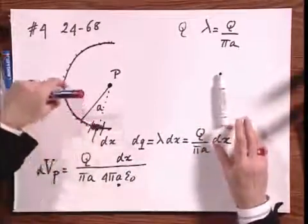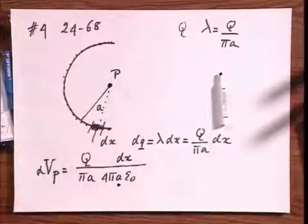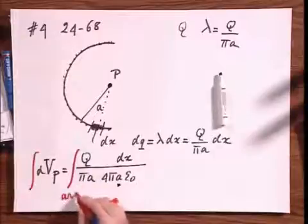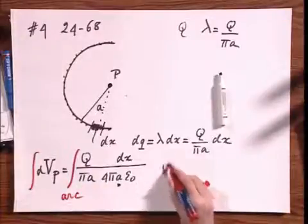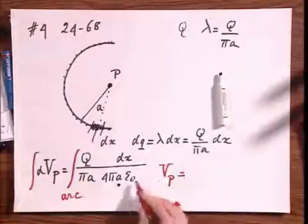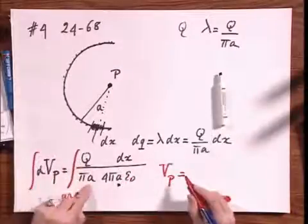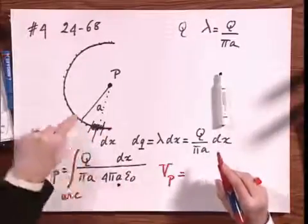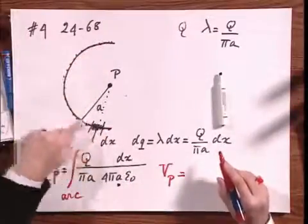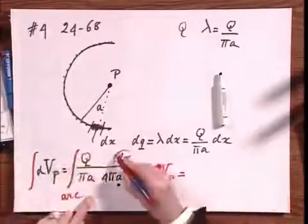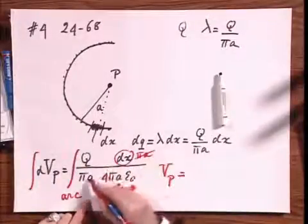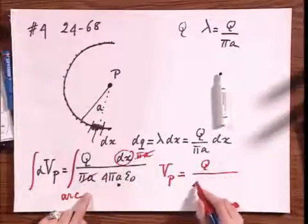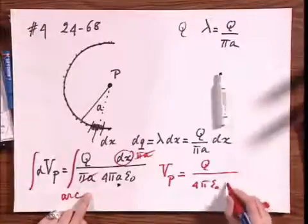But now I have to add all these elements DX, so that makes it easy. So I do an integral, and the integral has to be done along the arc, and that would give me then that VP is Q divided by pi A divided by this times the integral along the arc of DX. But the integral along the arc of DX itself is pi A, so I lose the pi A, and so I get Q divided by 4 pi epsilon zero times A.